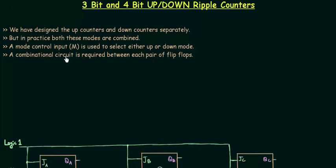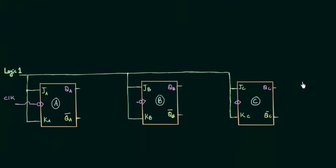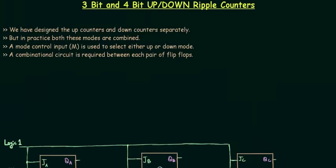This mode control input will decide whether the counter will do the up counting or it will do the down counting. We require a combinational circuit between each pair of flip-flops. We have to find out the combinational circuit to use in order to select QA or QA complement, which will be given to the clock of the next flip-flop, that is my B flip-flop. So this is our aim in this presentation.